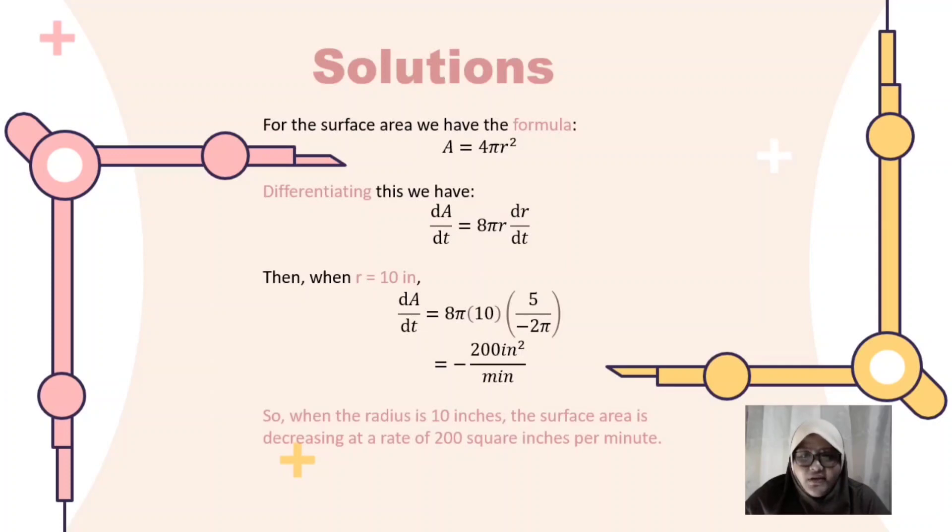dA/dt is equal to 8π times 10 times negative 5/(2π), equal to negative 200 inch square per minute. So, when the radius is 10 inch, the surface area is decreasing at a rate of 200 square inch per minute.